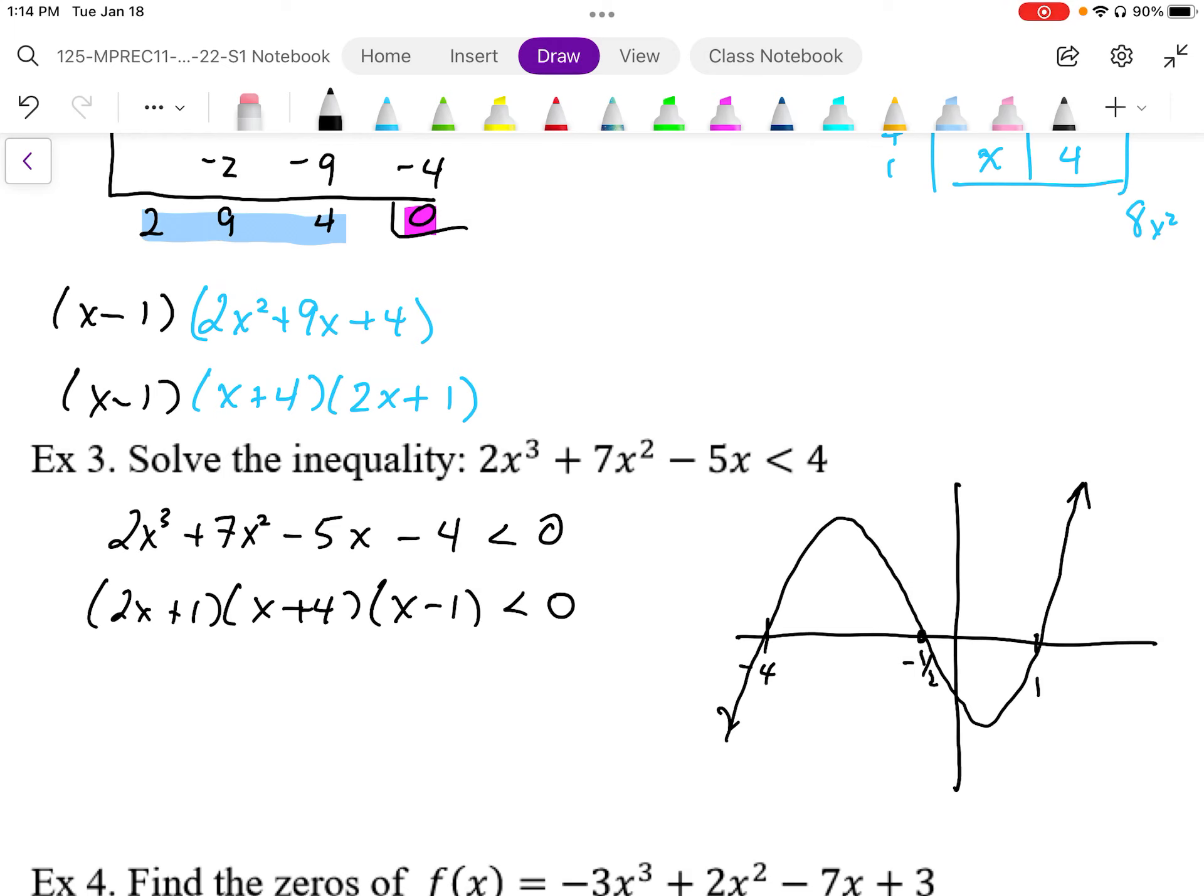And to solve this inequality, then, we want to know where it's less than 0. Well, less than 0 means below 0. That means these portions here. So then to solve this, the solution to this inequality is going to be x is less than negative 4, and x is going to be between negative 1 half and positive 1.